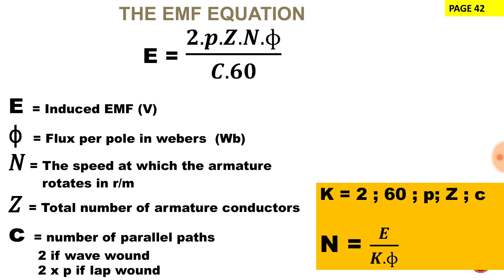We have 2 which is a constant and small letter p which represents the number of pole pairs. Z is the total number of armature conductors. N is the speed at which the armature rotates and flux per pole measured in Weber.